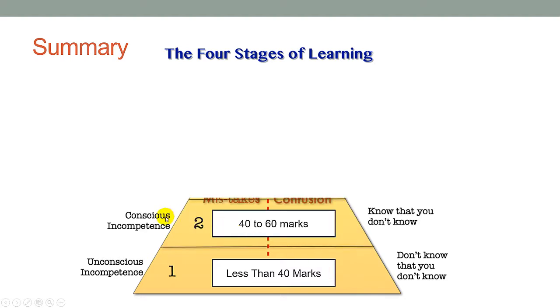Then the next stage is what we call conscious incompetence. This is when your child is getting between 40 to 60 marks and this is the part where your child actually knows that he doesn't know. That's good news because he knows what question to ask you because he doesn't know. If your child is in this stage, your child can start to practice more problems that are linked to concepts and know how to apply them correctly.